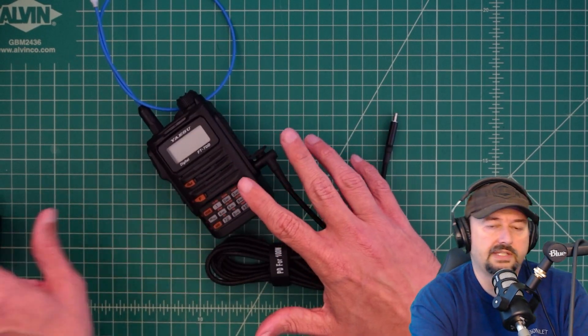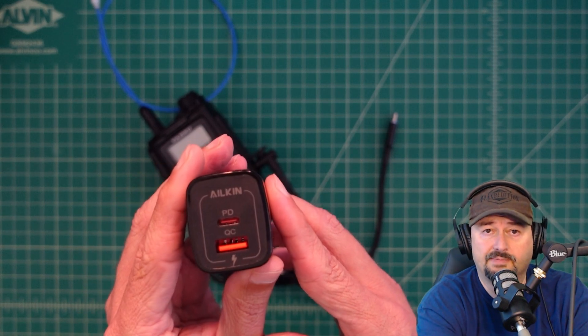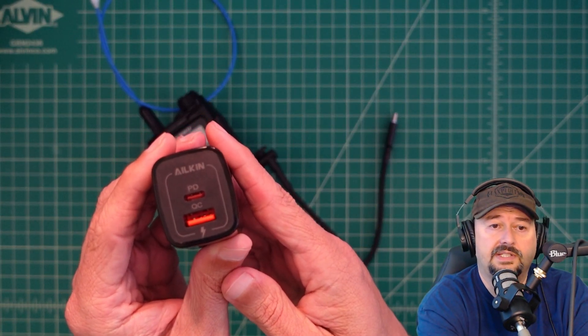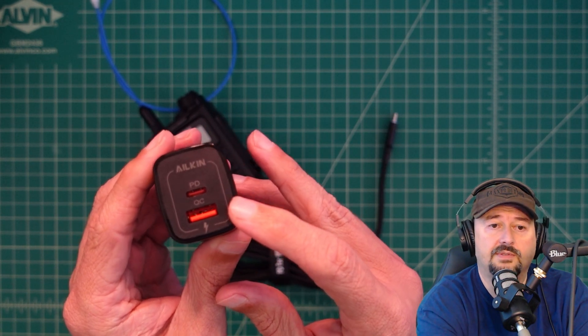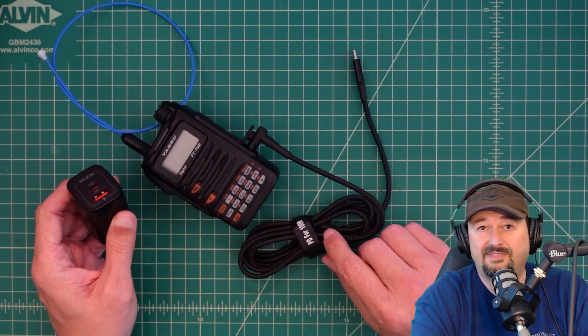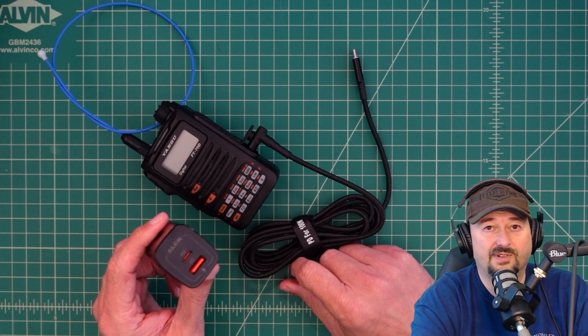So in order to use this you need some sort of charging block. Here's one and I'll have a link to this below. You don't have to use this one and maybe you already have one. But you can see this one has a PD port and a QC port and we're interested in the PD port. This cable is about $15 give or take and this charging block I think I got three of these for $11.